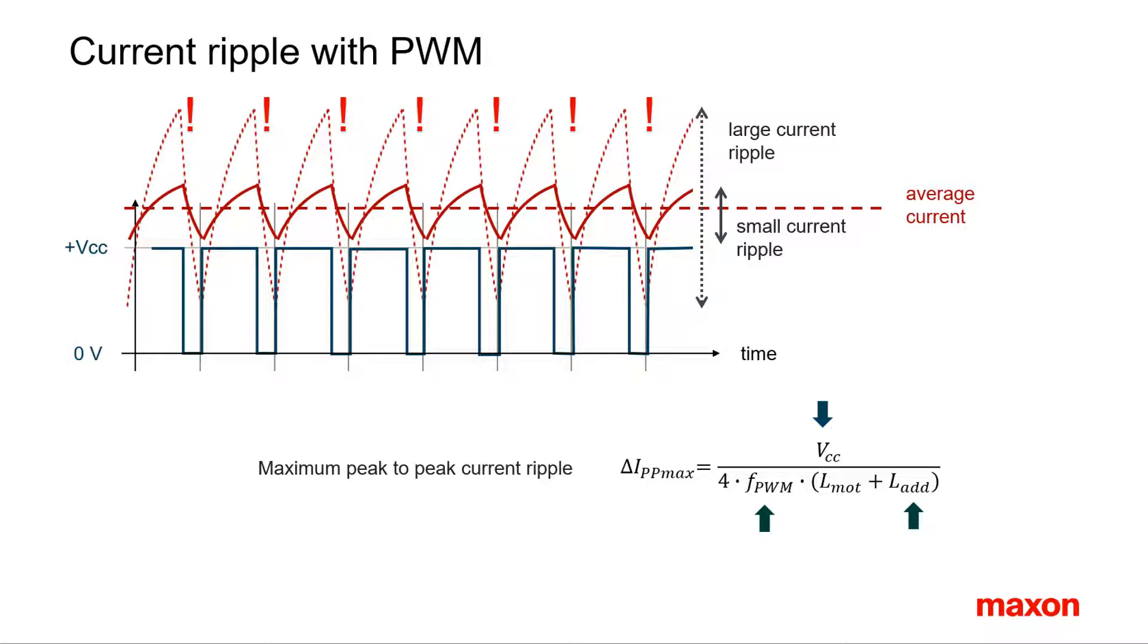Be careful, motor inductances depend on frequency, and for typical PWM frequencies, they are about three times smaller than the catalog value specified.